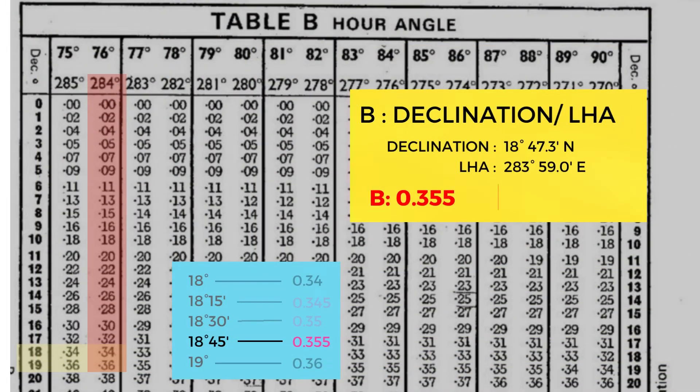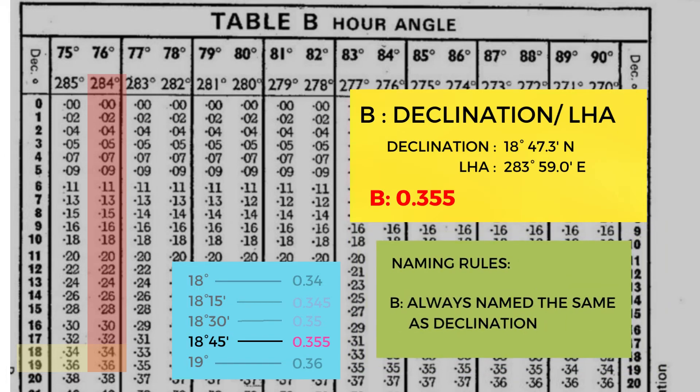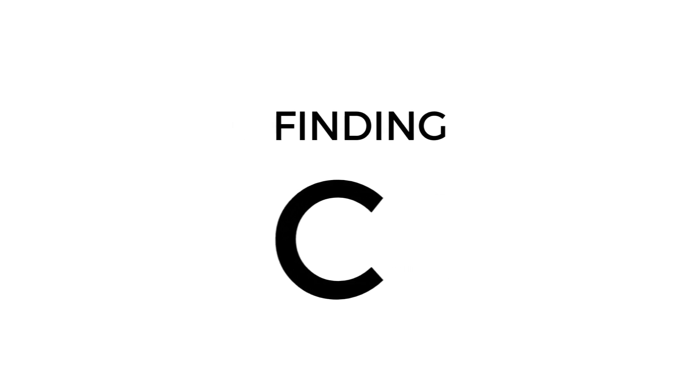For our naming rule, B is always named the same as declination, so we're giving it a northern name. Now let's find C by putting together the values of A and B.